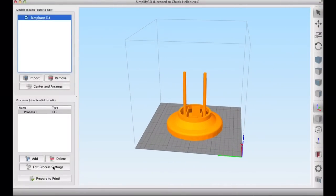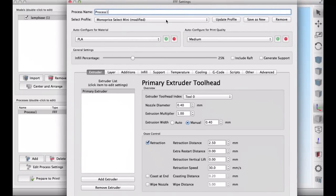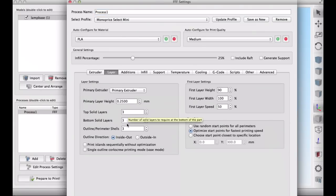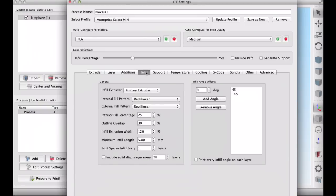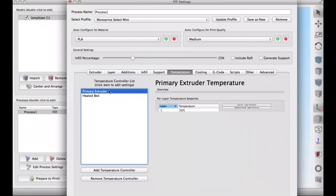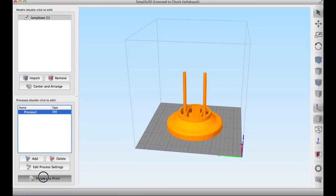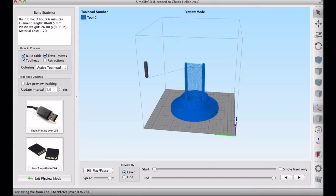So next I imported the base into Simplify3D to print it on the Select Mini. And I used very similar settings as the bulb. So 25% fill. Layer height was slightly different. I did a 0.25 versus a 0.2. The infill was 25% like I mentioned. No support. No brim. And temperature wise it was the same. 40 degrees on the bed, 205 in the hot end. And I sliced this. And once it was sliced I checked it just to make sure everything looked good. It looked fine. This isn't a tough print here. So I sent it off to the printer.